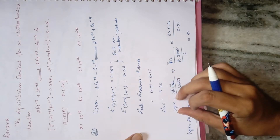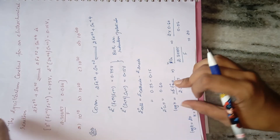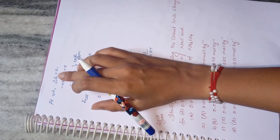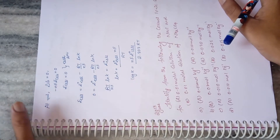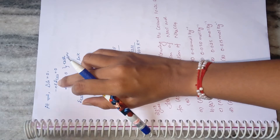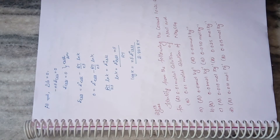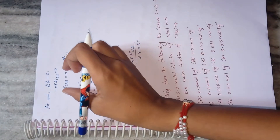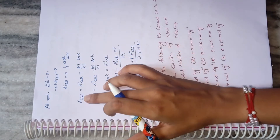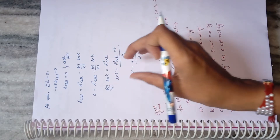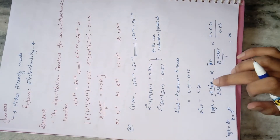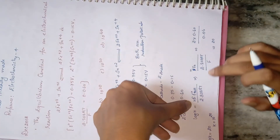Now derive the log K formula. At equilibrium, ΔG = 0. Since ΔG = -nFE_cell, this means E_cell = 0. Substituting into the Nernst equation: 0 = E°cell - (RT/nF)ln K. Rearranging: log K = nF × E°cell / (2.303RT). This is the formula used for this question.